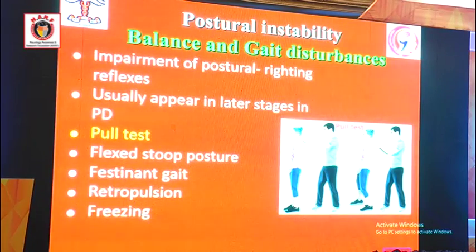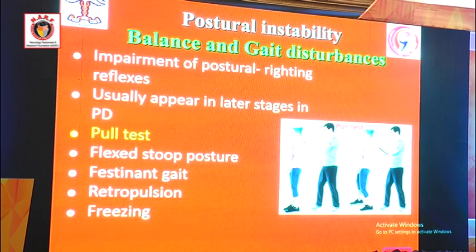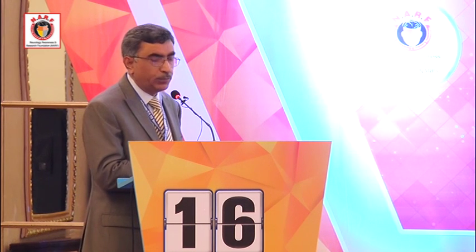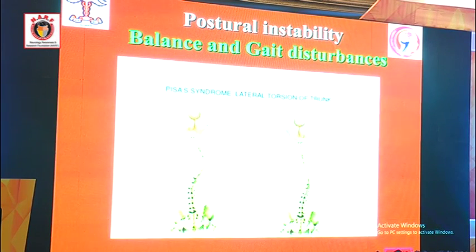Rigidity is increased resistance felt during passive movement of the joint. We have two types in Parkinson's disease: plastic type with uniform increase in tone, and superimposed tremor resulting in jerky movement - described as cogwheel rigidity. Sometimes patients have severe flexor posture called camptocormia. There are also abnormalities of postural balance due to impairment of postural righting reflexes resulting in falls. You check this with the pull test - standing behind the patient and pulling backward; a PD patient will continue to fall backward. You can also see PISA syndrome with lateral trunk torsion.